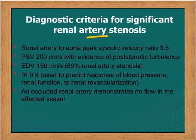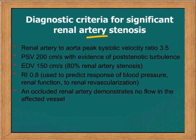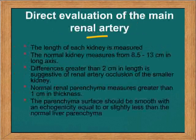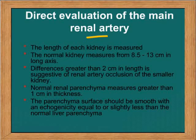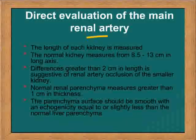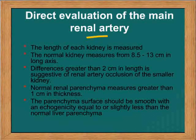When the resistive index (RI) is 0.9, one would expect the patient to have normal renal vascularity. An occluded renal artery demonstrates no flow in the affected vessel. The length of the kidney is measured — the normal kidney measures 8.5 to 13 cm along the long axis, and a difference of more than 2 cm in length is always suggestive of underlying occlusion of the renal artery. The normal parenchymal thickness should be 1 cm; if it is less than that, this is suspicious of underlying renal artery stenosis. The parenchymal surface should be smooth, and if it is not, one should suspect stenosis resulting in multiple infarcts.